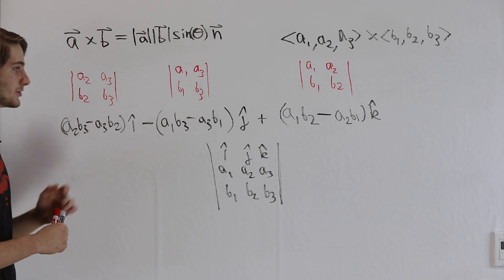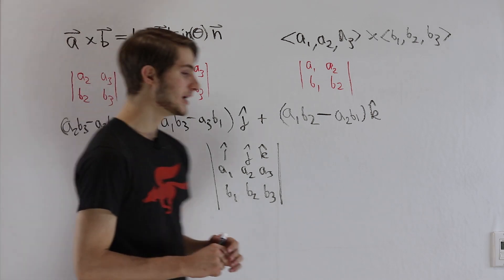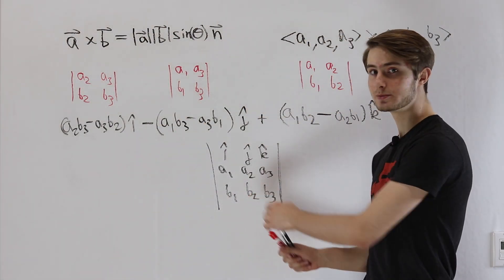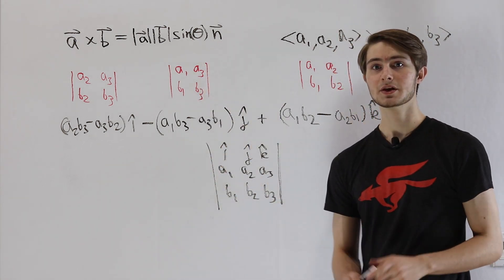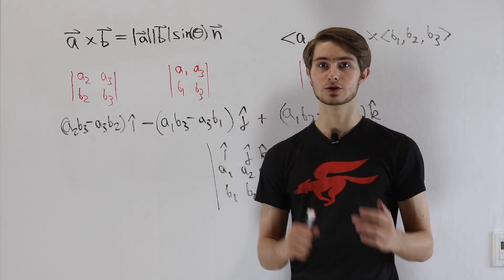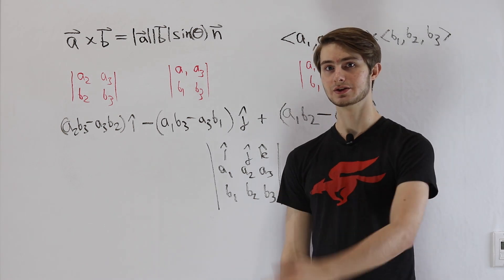So that is the formula for the cross product. And we're going to use this formula along with the fact that it gives us a normal vector when we start looking at things like the equations of planes a little longer in the future.